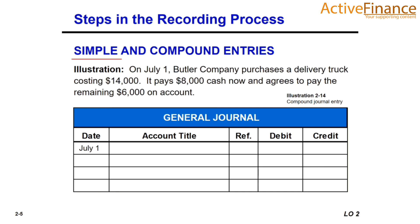Now I want to discuss two terms: simple and compound entries. A simple entry involves only two accounts — for example, purchasing computer equipment involves Equipment and Cash. An entry that involves more than two accounts is known as a compound entry. The next illustration shows an example of a compound entry being journalized.